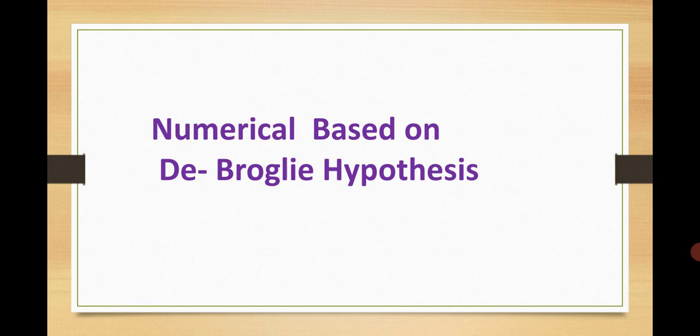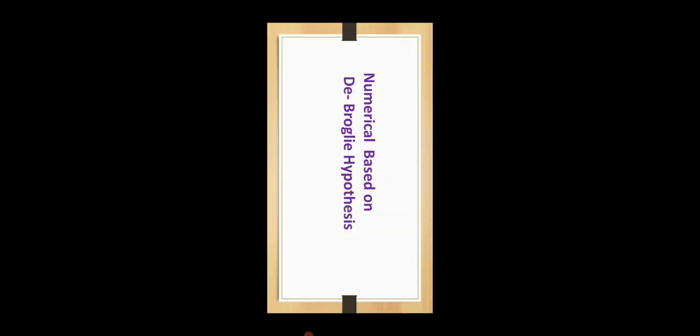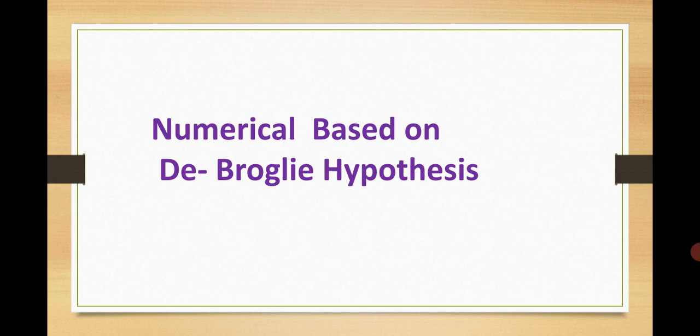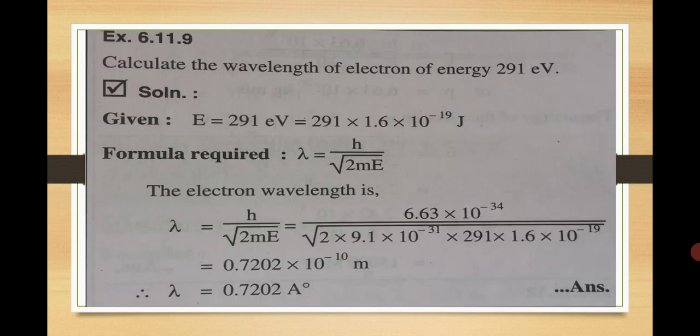Today's lecture is on the numericals based on de Broglie's hypothesis. As we know, de Broglie's hypothesis states that every moving particle having mass m and having velocity v is associated with a wave — that wave is generally termed as matter waves — where lambda is equal to h upon mv.